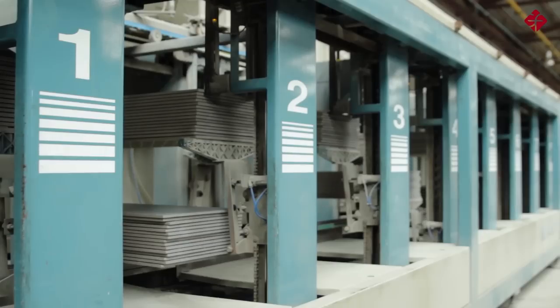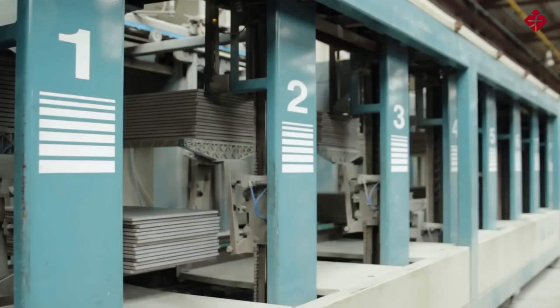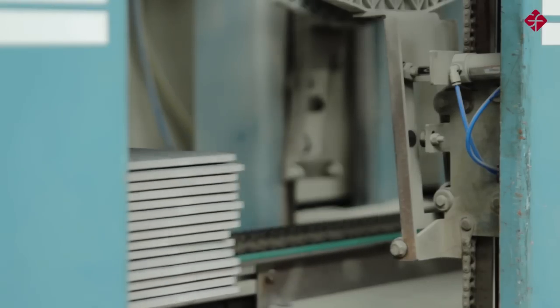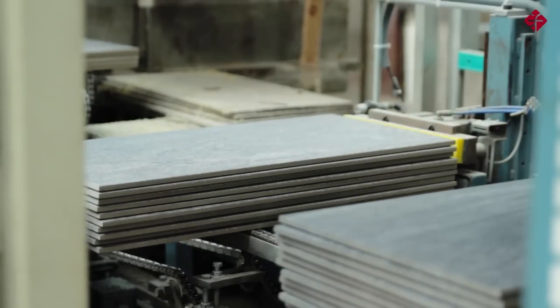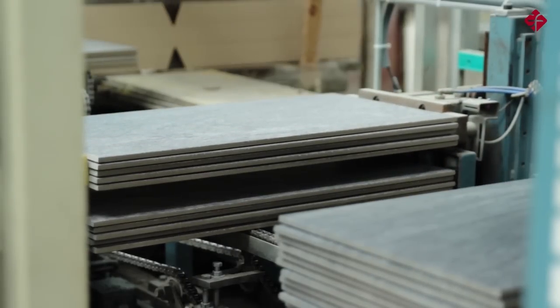Later, the sorter determines the size of the tiles. Ceramic tiles must always be the same size, which must comply with certain standards of flatness, all of which are checked on these sorting lines.